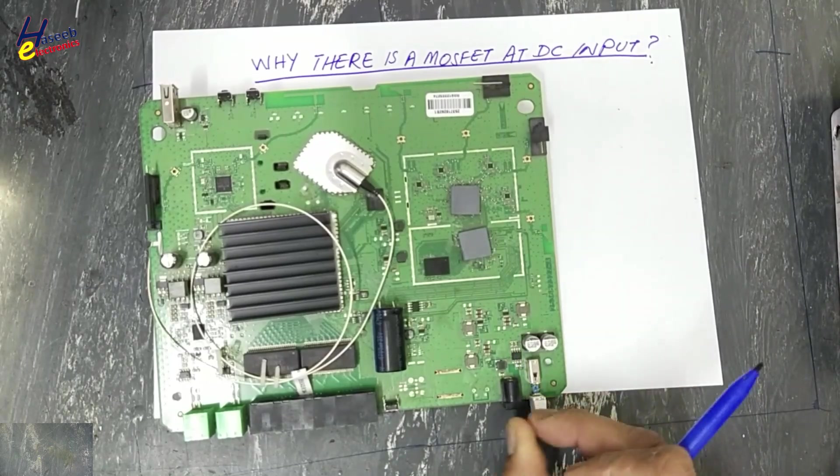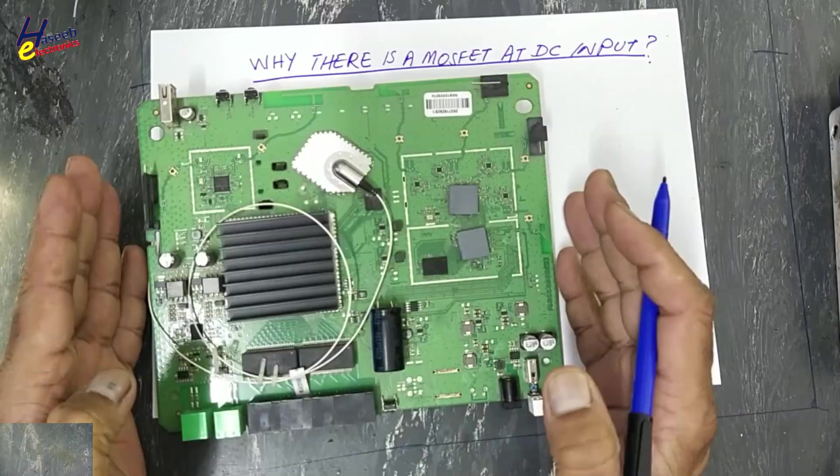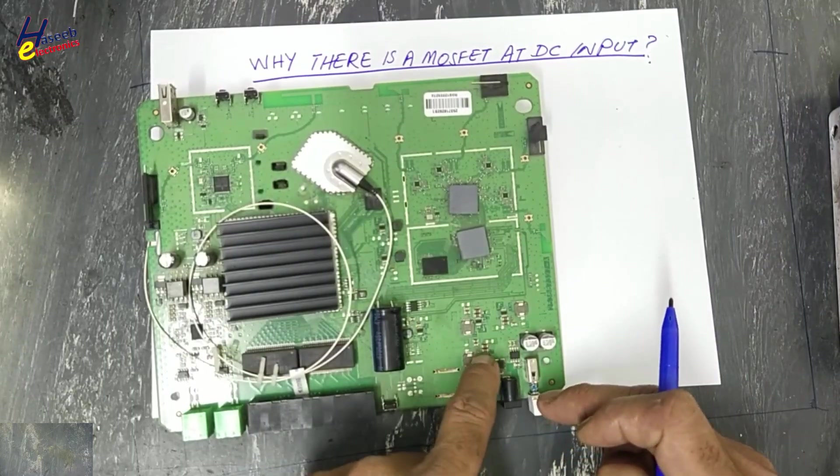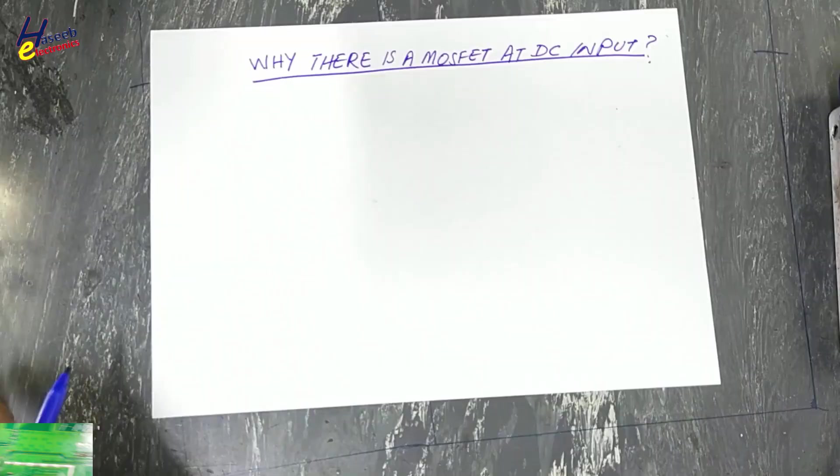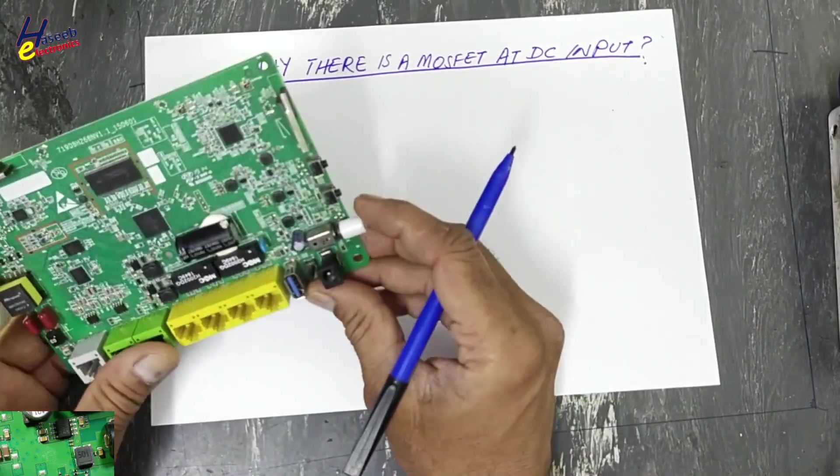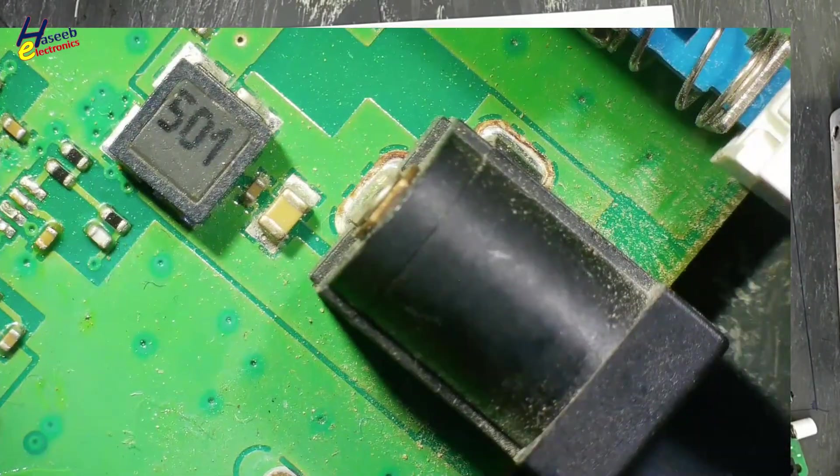Why is there a MOSFET at the DC input line? This is a circuit for an FTTH router. This is the input jack. After the input jack, here is a power MOSFET 4431C. In this router, no MOSFET. Let's see this circuit configuration input.